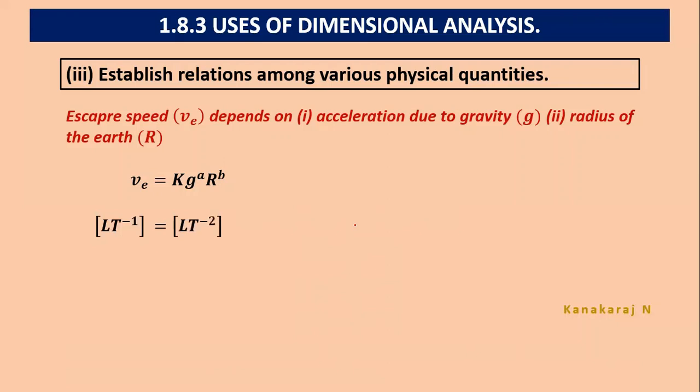On the left hand side, we have LT^-1. On the right hand side for G, it is LT^-2 to the power A. And for radius, it is length L^B. Let us bring all L term and T term separately. We have on the left hand side as it is LT^-1. And on the right hand side, we bring all L term together, L^(A+B). Then T^-2A. Now, we have to equate the power of T. That will be simple. When we equate the power of T, we get -2A equal to -1. A equal to 1/2. Okay, we got it.